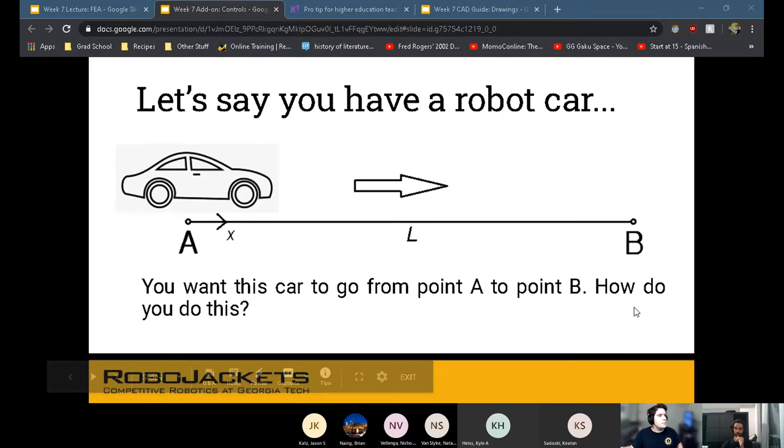Let's say you have a robot car. You want this car to go from point A to point B. How do you do this? Think of different ways you might make your car go from point A to B. What can you think of? Just looking for a little audience participation.